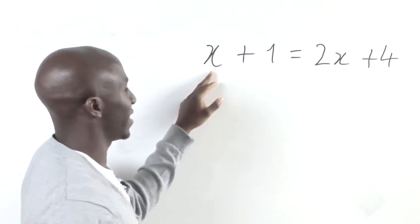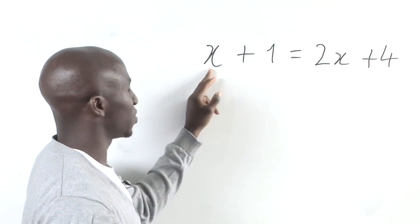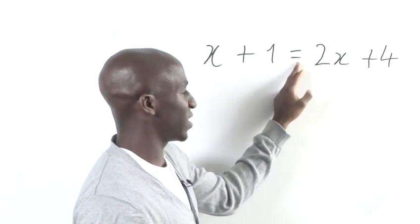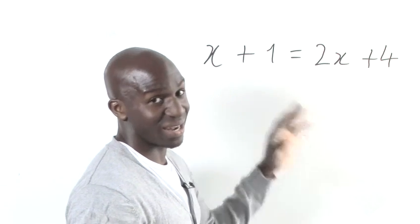Now if you look at this x, it's a positive x. So as soon as we take it on the other side of the equal sign, it's going to be a negative x.